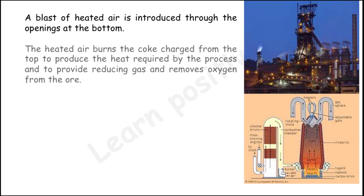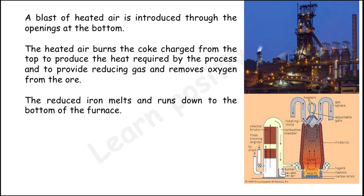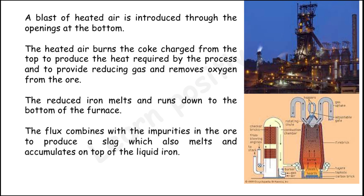The blast of heated air is introduced through the opening at the bottom of the furnace. The hot air burns the coke charged from the top to produce the heat required by the process, and to provide reducing gas to remove oxygen from the iron ore. The reduced iron runs down to the bottom of the furnace. The flux combines with the impurities in the ore to produce slag, which also melts and accumulates on top of the liquid iron.